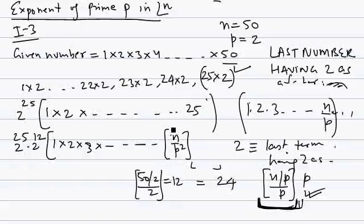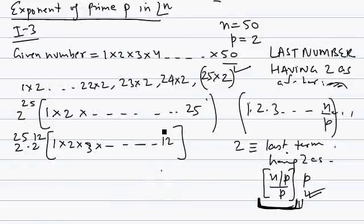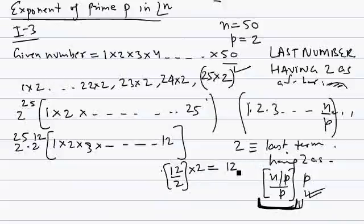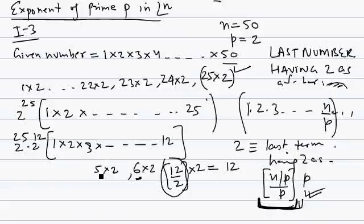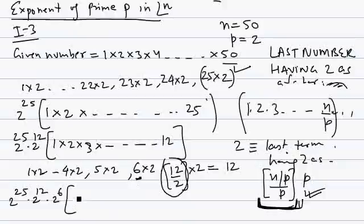We repeat the process again on 1 × 2 × ... × 12. We divide 12 by 2, take the floor: floor(12/2) = 6, and 6×2 = 12. So 2 appears 6 more times. We take 2 to the power 6 out. This corresponds to floor(n/p³). So the running total is now 2^25 × 2^12 × 2^6, and the remaining product is 1 × 2 × 3 × ... × floor(n/p³), which is 1 through 6.